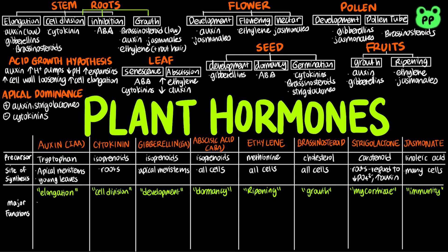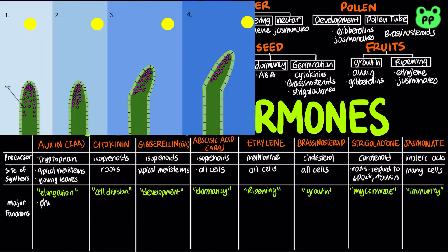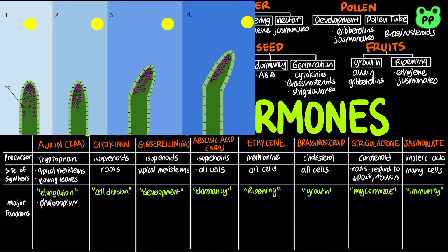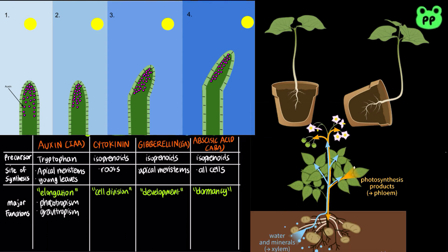In the last portion of the video, I am going to cover other major functions of each plant hormone. Auxin also plays an important role in phototropism, the bending of plants towards light, gravitropism, plants' response to gravity, and increasing vascular differentiation.